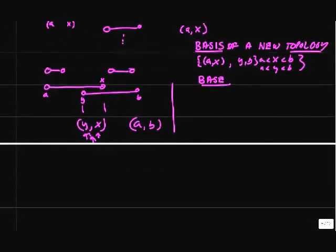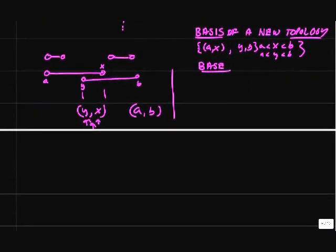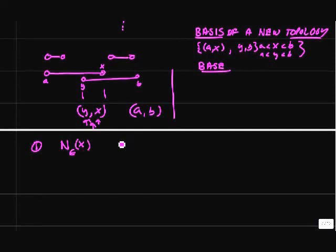In order to study continuity pretty much anywhere on the real number line, the topology we have on interval AB leaves some points out. So to study continuity on the entire real number line, we need a topological basis for R. There are lots of basis sets that generate the full neighborhood standard topology on the real numbers. Here's one: take all epsilon neighborhoods of points on the real number line, where X is an element of R and epsilon is an element of the real numbers.